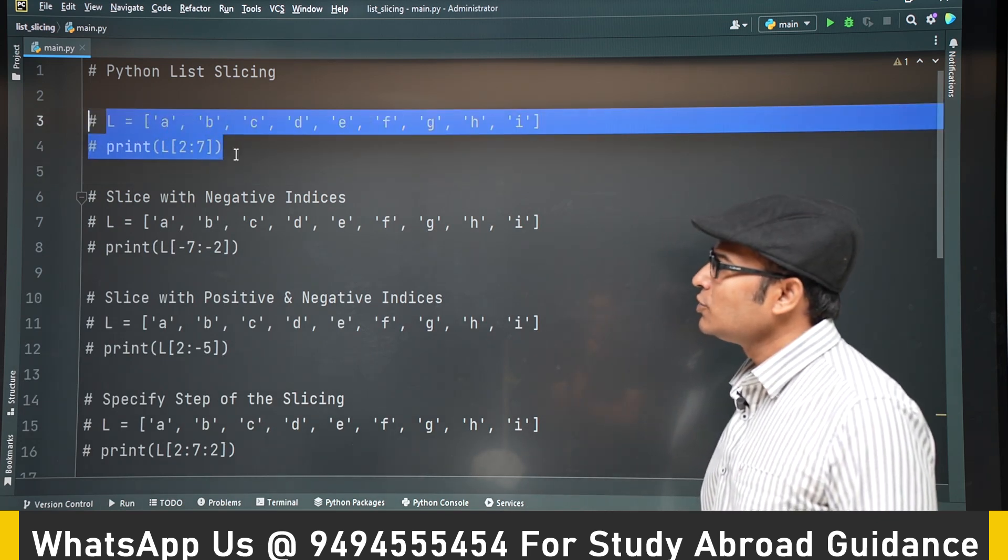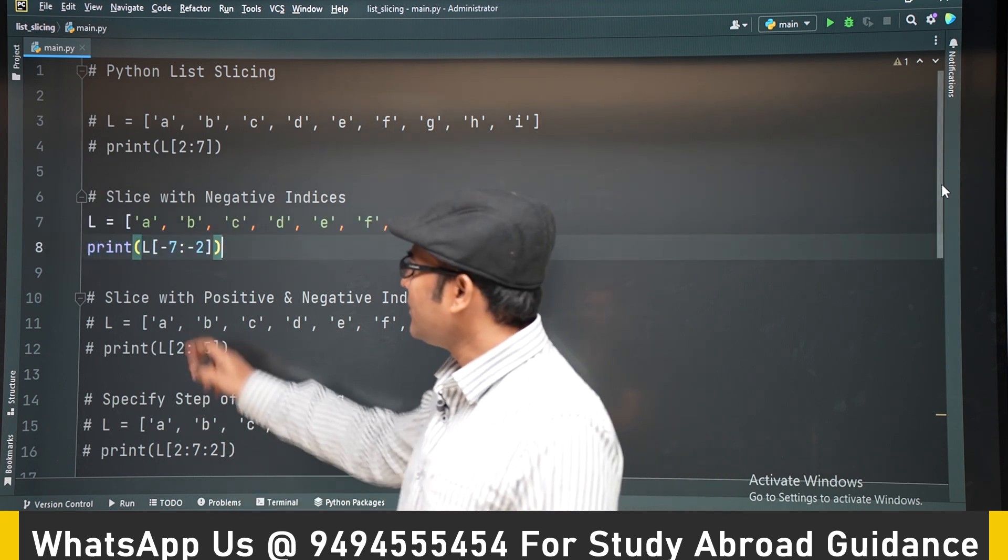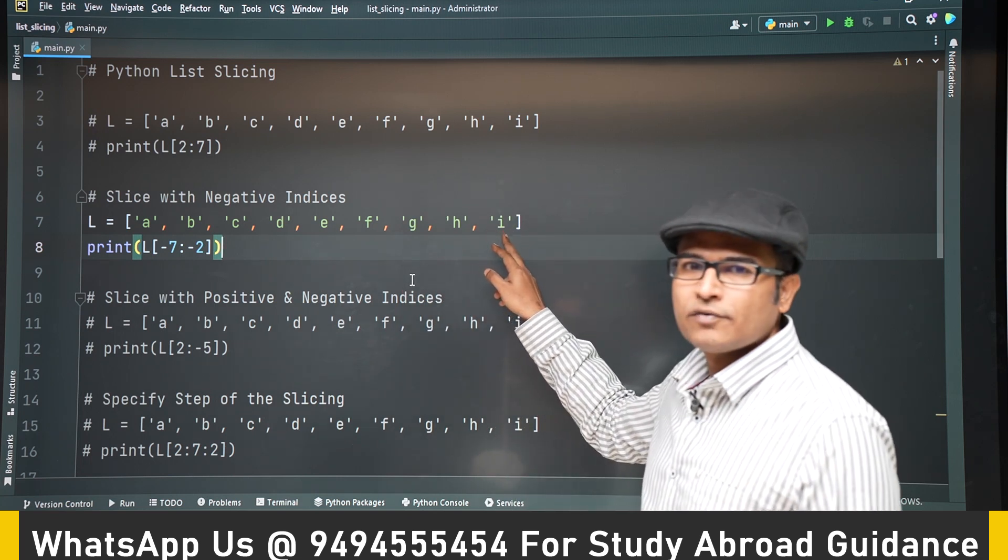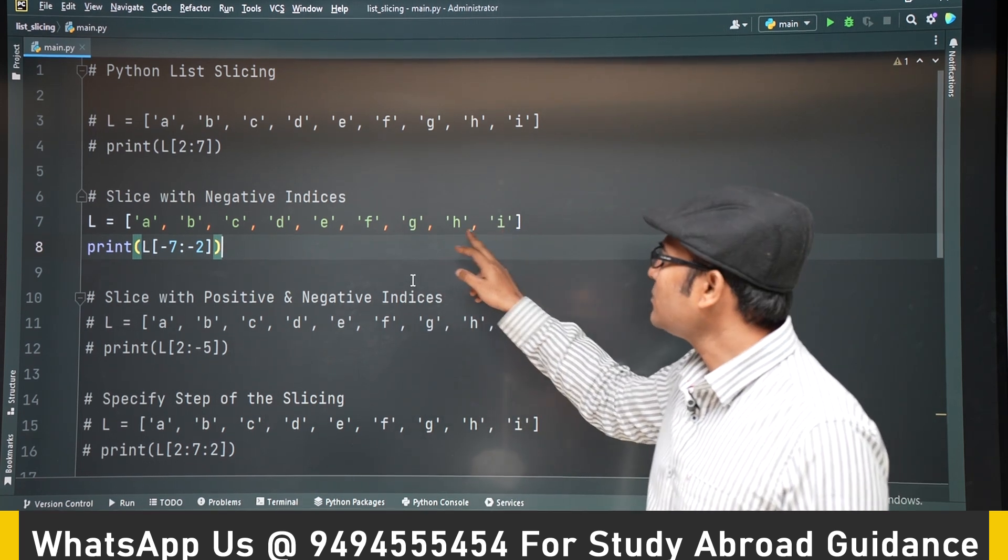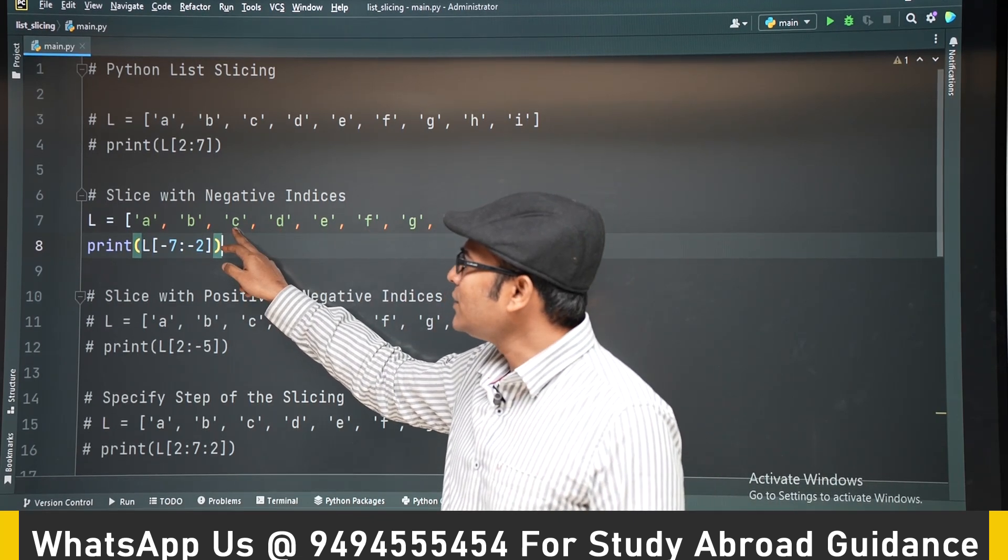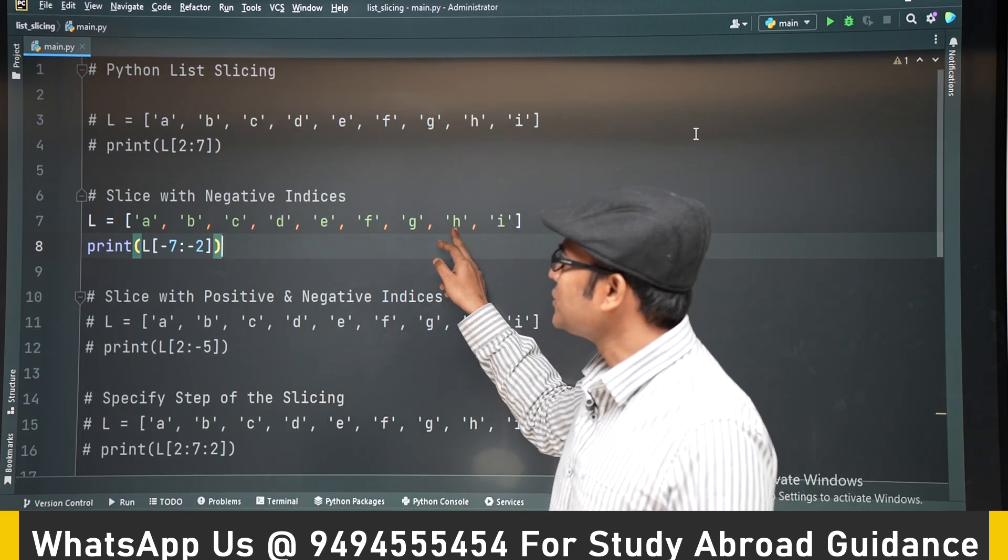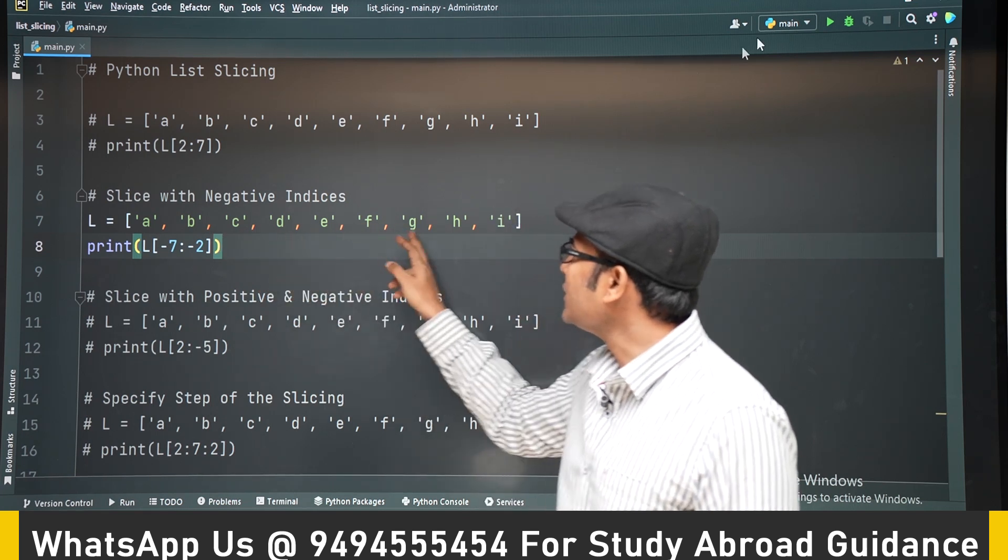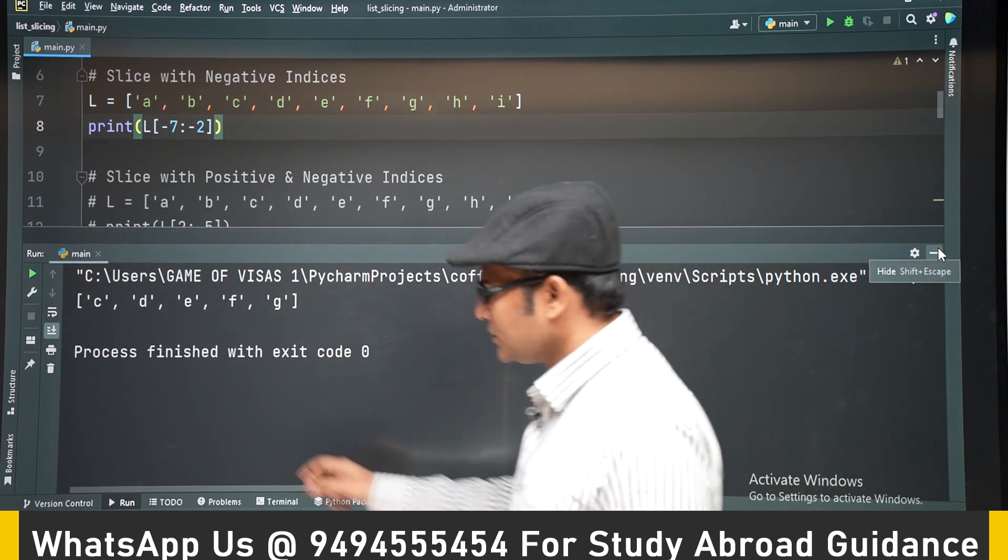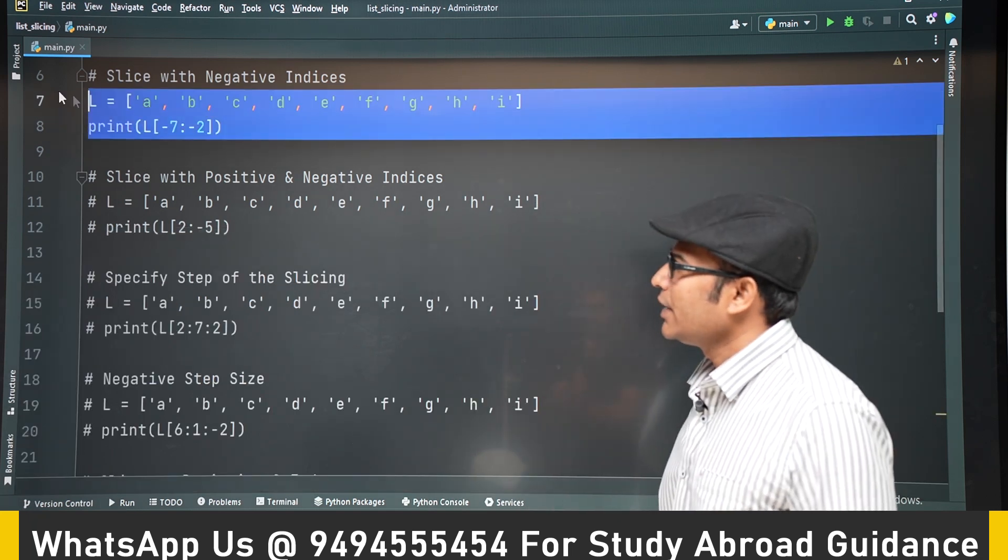So if you want to iterate only over that part, you can use this slicing. Now slicing can also be done using negative numbers. If I write minus 7 to minus 2, minus 7 means C, and minus 2 means H. So from C to G it will give you everything without taking H. From C to G it will give us everything without taking the last index, end index.